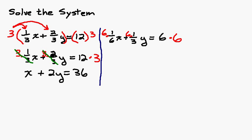What do we do next? Hopefully you're saying cancel. So these 6's are going to cancel right here. 6 and 6, 6 and 3. That 3 goes into 3 once, 3 goes into 6 twice. So we end up with 1x, which we can just write as x, plus 2y equals 36.